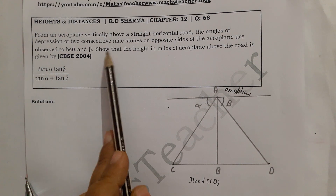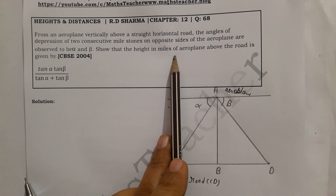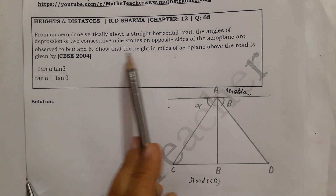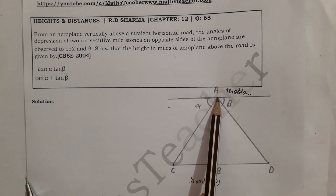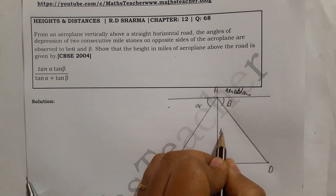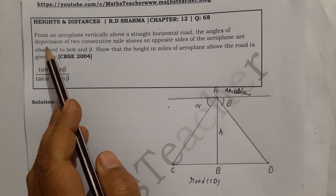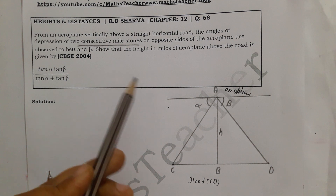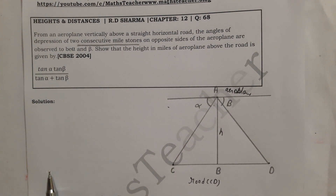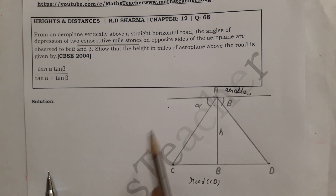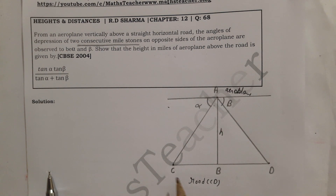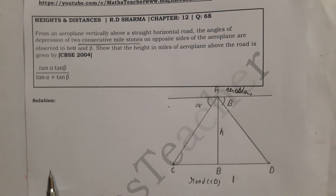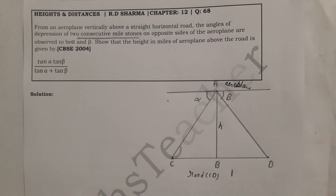We need to show that the height H in miles of the aeroplane above the road equals the given expression. Since these are consecutive milestones — like numbers 2 and 3, or 4 and 5 — the distance between C and D is exactly 1 mile. So the distance CD equals 1. We have two triangles and we need to find H.